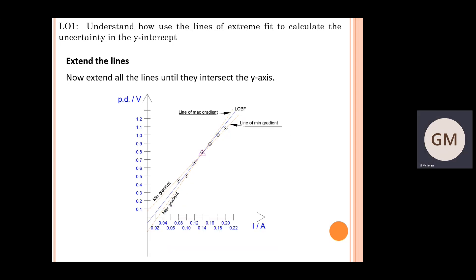The first thing we need to do is extend all three lines until they intersect the y-axis. You can see that the line of minimum gradient will end up giving you the maximum value of c, and the line of maximum gradient will give you the minimum value of c in terms of your y-intercept. Continue all three lines to intersect the y-axis as shown in the graph on the slide.